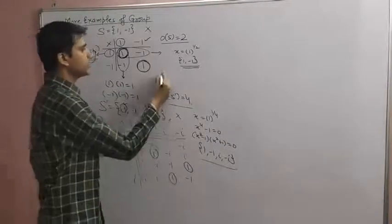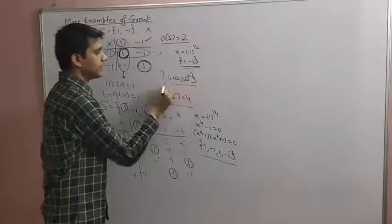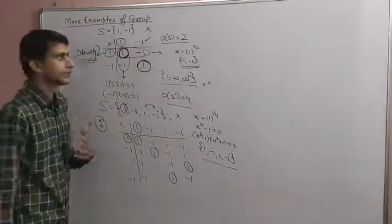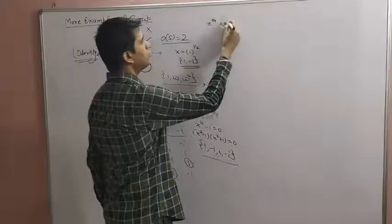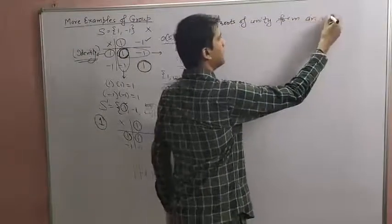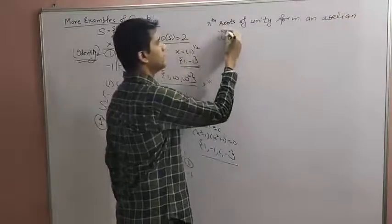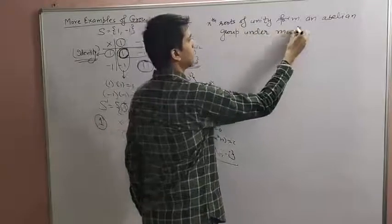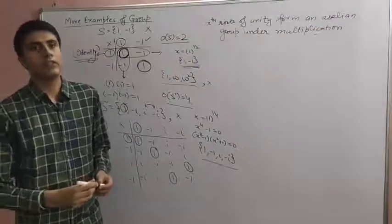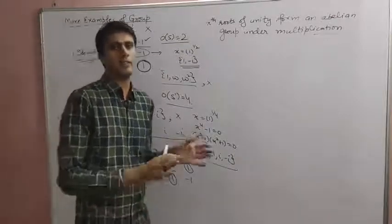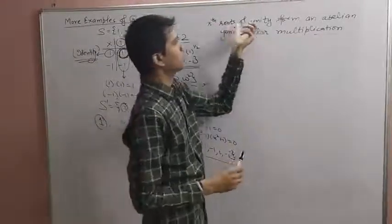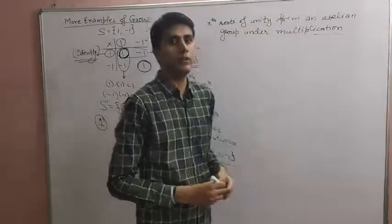Similarly, the cube roots of unity are {1, ω, ω²}, which also form a finite abelian group under multiplication. We can generalize: the nth roots of unity form an abelian group under the operation of multiplication. So if asked for a finite abelian group with exactly 5 elements, the answer is: fifth roots of unity under multiplication.